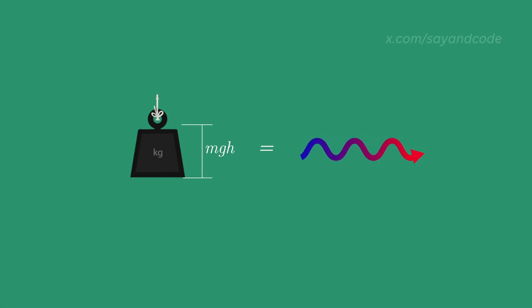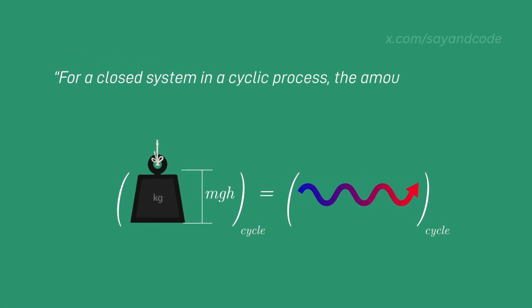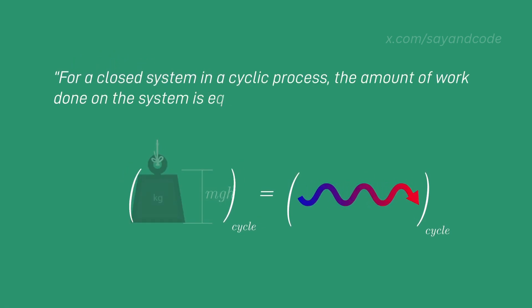Since the system was returned to the initial state at the end of the experiment, this is considered a cyclic process. Also, since only the mass of the system is not exchanged with surroundings, it is considered to be a closed system. So in formal definition, for a closed system in a cyclic process, the amount of work done on the system is equal to the amount of heat lost.